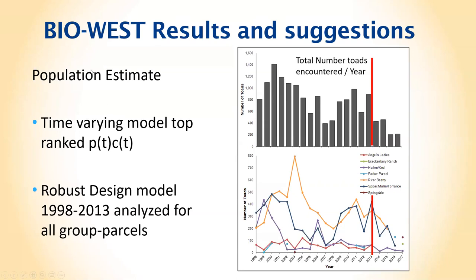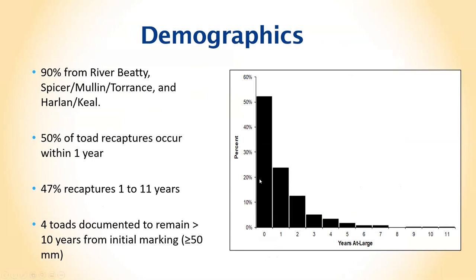Population estimates were confirmed by a third-party analysis from Bio West, who re-ran the analysis and also looked at survivorship. The red line indicates the years all habitats were consistently surveyed. After 2013 they didn't go to all habitats, so apparent population declines can't be directly compared. Demographic data showed 50% of recaptured toads were recaptured within the first year; a few were recaptured after 10 years.